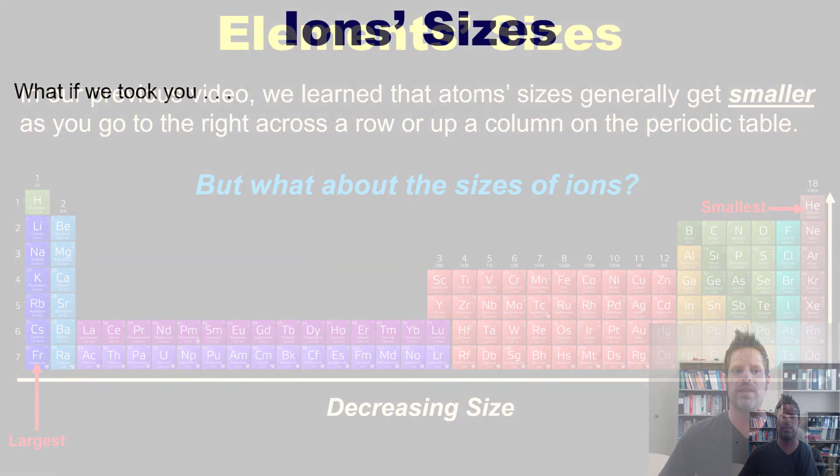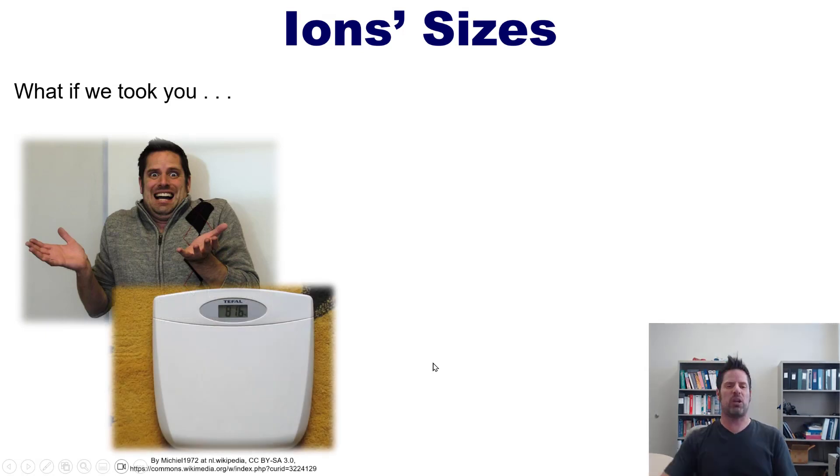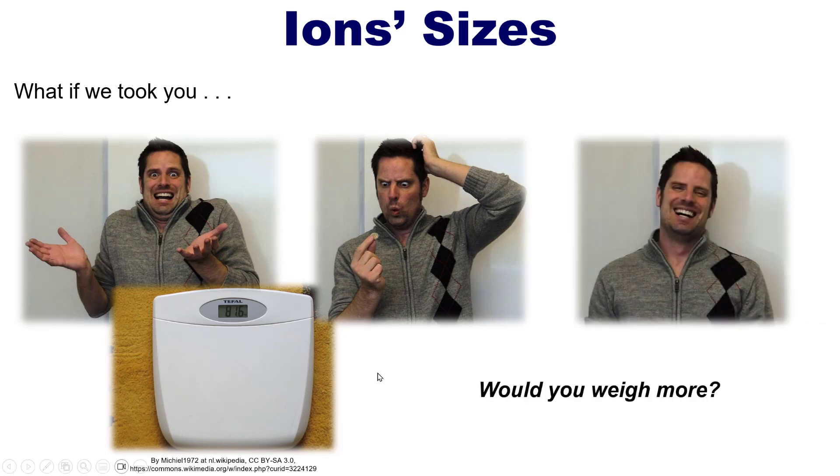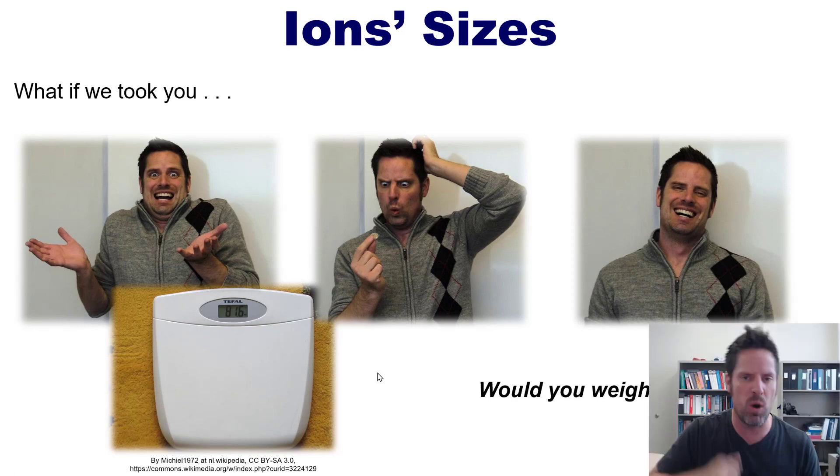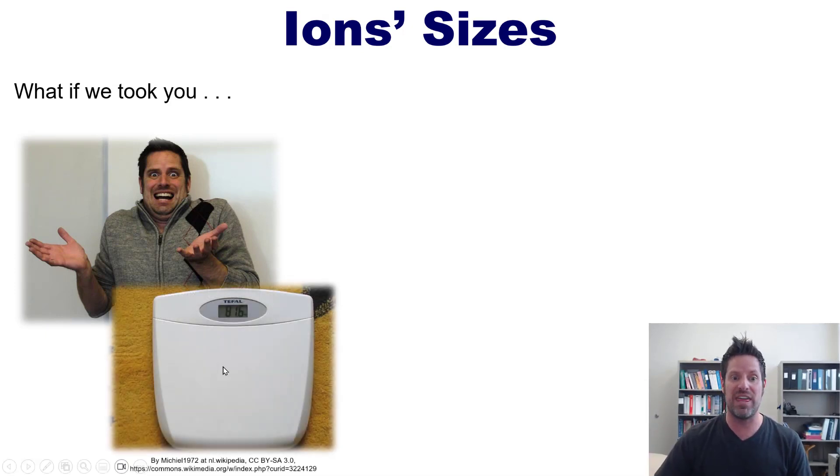I want you to imagine that you took yourself, in this case a silly picture of me, and put yourself on an extremely accurate scale. Then you put a single coin in your pocket and remeasured yourself on that scale. Would you weigh more or less? Yeah, obviously you would weigh a little bit more. Now what if you did the reverse? What if the original version of you right here had a coin in your pocket and then you took it out? What would you weigh then? Yeah, you'd weigh a little bit less, just by virtue of gaining or losing a coin.